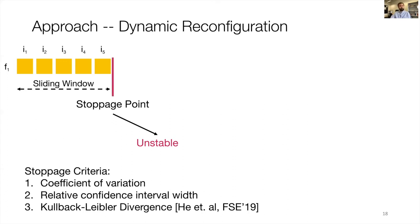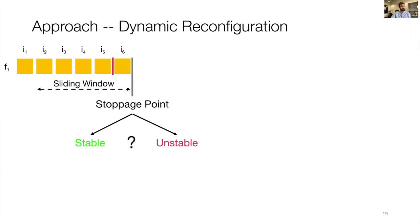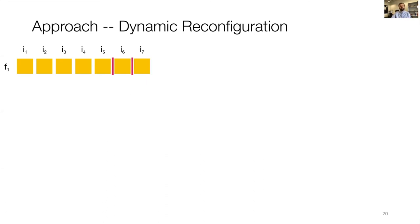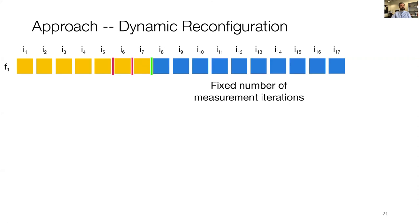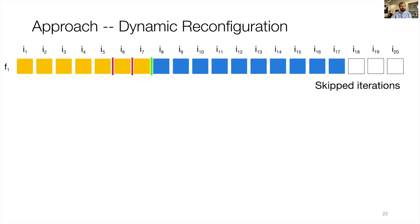If the measurements are unstable at that point, we run another warm-up, arrive at another stoppage point, the sliding window shifts to the right, and we decide again. We repeat this until our stoppage criteria tells us that we are in a steady state. Our approach then runs a fixed number of measurement iterations — the reason we don't run just one is that even in a steady state, different measurement iterations will not yield the exact same result, so we run multiple to have robust results. Because we can stop the warm-up phase earlier compared to static configuration, we can skip a few iterations.